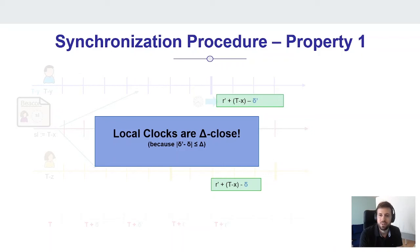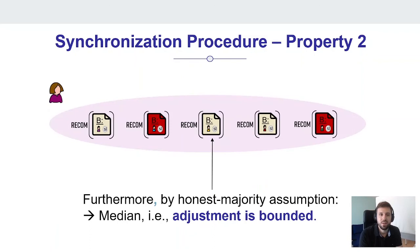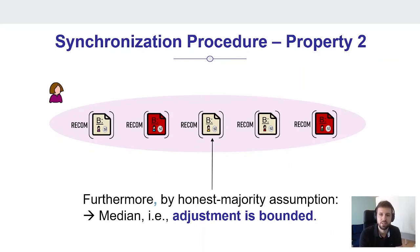This is the first important property of this clock synchronization mechanism. Note that in this argument we didn't use any precondition that the parties computing the recommendation need to be close initially — no precondition that the party eligible to send the beacon and the party wishing to synchronize need to be close. This will turn out to be important later. A second important property is that adjustments computed by alert parties are bounded. Because we have the honest majority assumption in place and take the median of all recommendations, the result is bounded from below and above by beacons created by alert parties. So the jumps that alert parties do are limited — an important property to not jeopardize security.